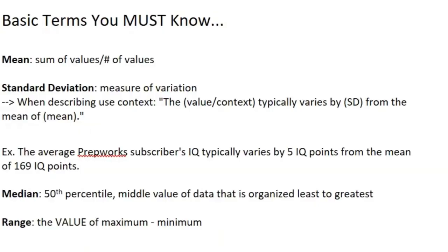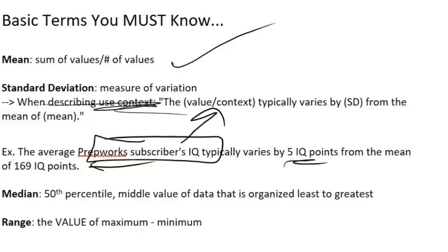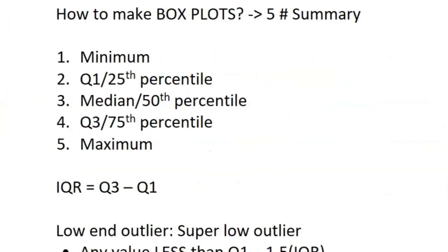Now let's go on to some basic terms you must know. You've probably seen these before. Mean - that's the sum of all the values divided by the number of values or the average. Standard deviation is just a measure of variation. Here's an important part when you're describing it in context: you want to say the value or context typically varies by standard deviation value from the mean. Let's look at the example: the average prep work subscriber's IQ typically varies by five IQ points - that's the standard deviation - from the mean of 169 IQ points. The median is the 50th percentile, where if you have data, you organize it from least to greatest and look at the value in between. Range is just the value, not the interval, of max minus min in your data set.